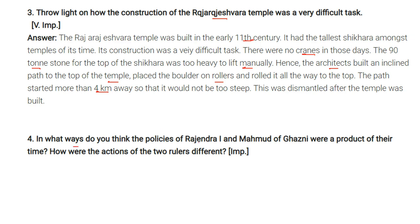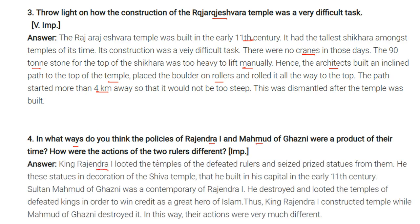Comparing the policies of Rajendra I and Mahmud of Ghazni: King Rajendra looted the temples of defeated rulers, seized prized statues, used them for decoration of his Shiva temple, and built them into his capital in the early 11th century. Sultan Mahmud of Ghazni, a contemporary of Rajendra I, destroyed and looted temples of defeated kings in order to win credit as a great hero of Islam. While Rajendra I constructed temples, Mahmud of Ghazni destroyed them — their actions were very different from one another.